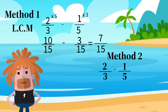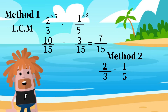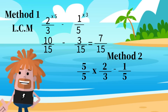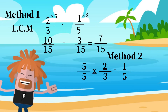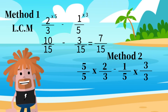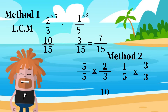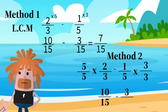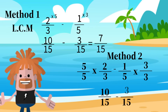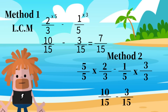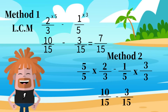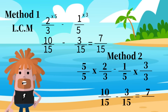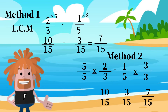Method 2: The denominator for our second fraction is 5, so we are going to multiply our first fraction by 5 over 5. The denominator for our first fraction is 3, so we are going to multiply the second fraction by 3 over 3. 5 times 2 is equal to 10, and 5 times 3 is equal to 15. 3 times 1 is equal to 3, and 3 times 3 is equal to 15. This is good because 15 is actually the lowest common multiple. 10 minus 3 is equal to 7, and we write back our denominator, 15. Our answer is 7 fifteenths.